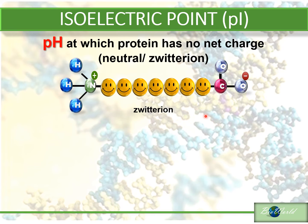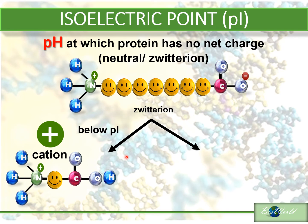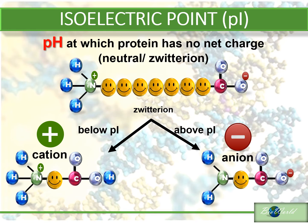When these proteins are placed in solutions of pH below or above the PI, the zwitterion nature of the protein changes. If the protein is placed in a solution below its PI — remember PI is the pH at which it is neutral — if the pH of the solution is less than the pH where the protein is neutral, the protein will become positively charged; it becomes a cation. And if the protein is placed in a solution with a pH above the PI, then that protein becomes negatively charged — it becomes an anion.